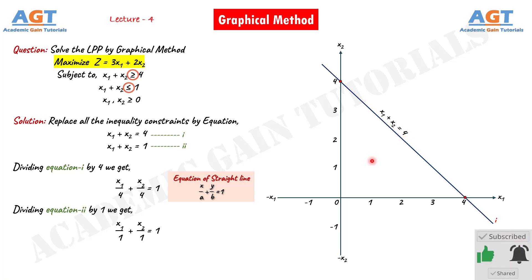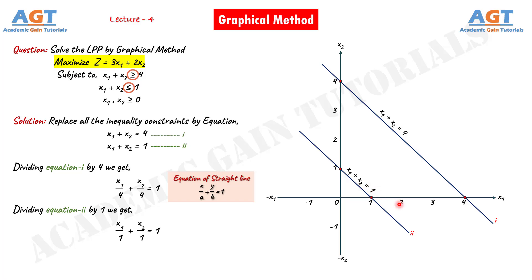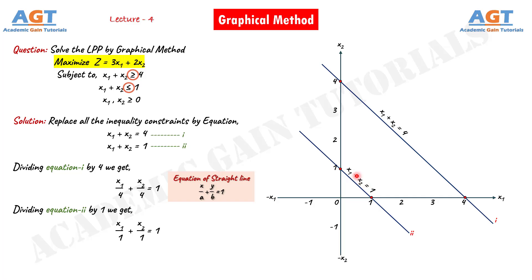For equation number 2, below x1 there is 1 and below x2 there is also 1, so we take a point at 1 on the x1 axis and a point at 1 on the x2 axis, and join them using a line. We denote this line as number 2, so we can understand it was plotted from equation number 2. We can also write the equation number 2 beside line number 2. So here we have two lines for the two equations.